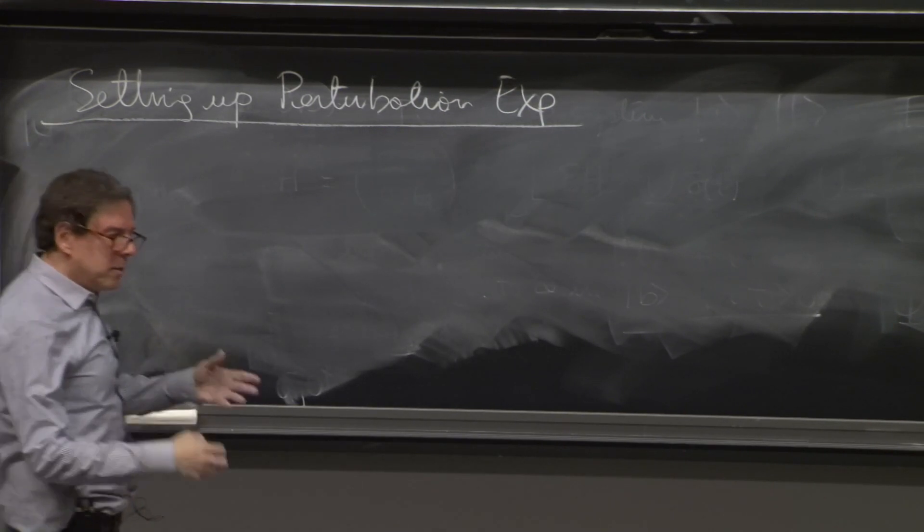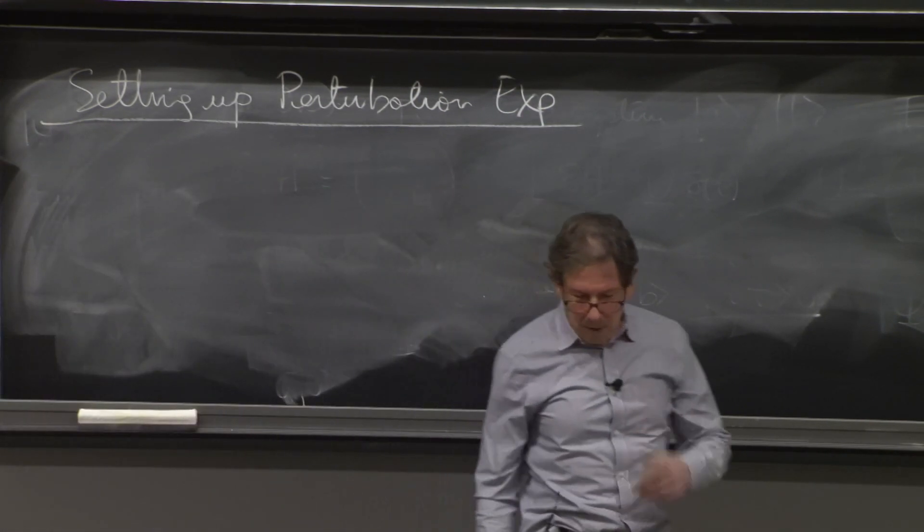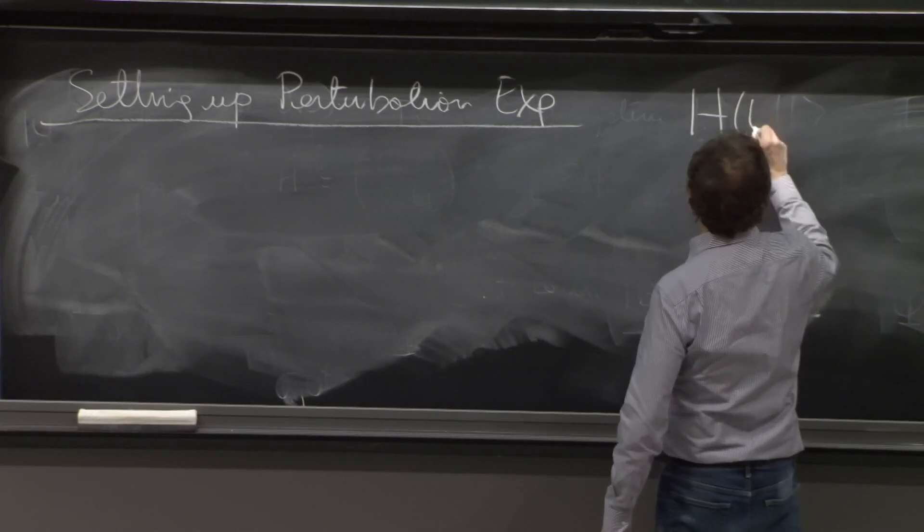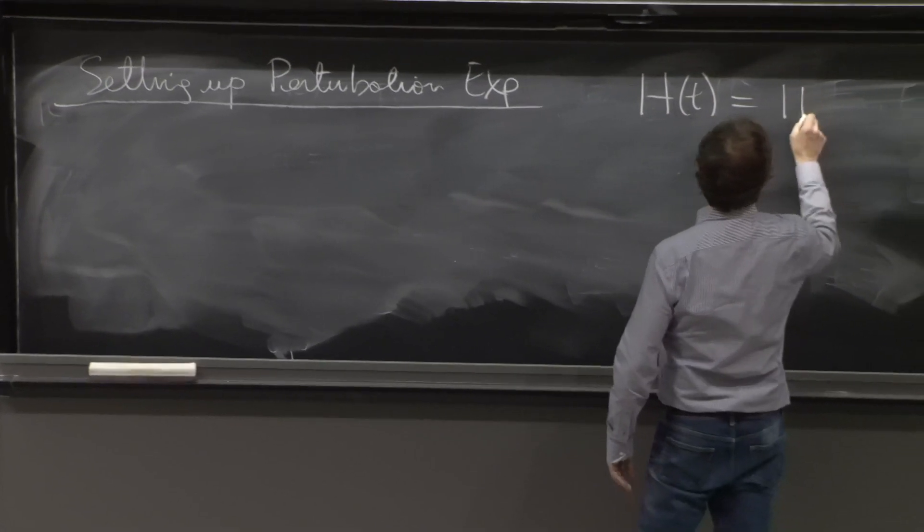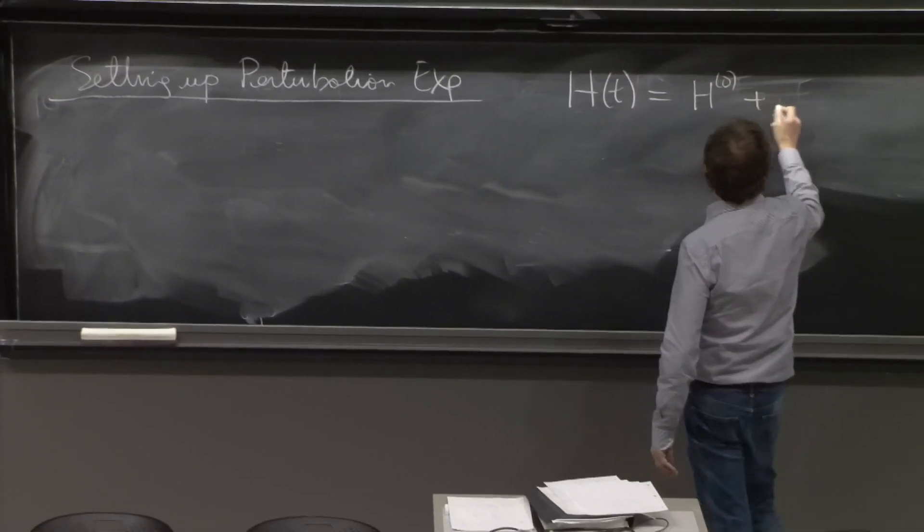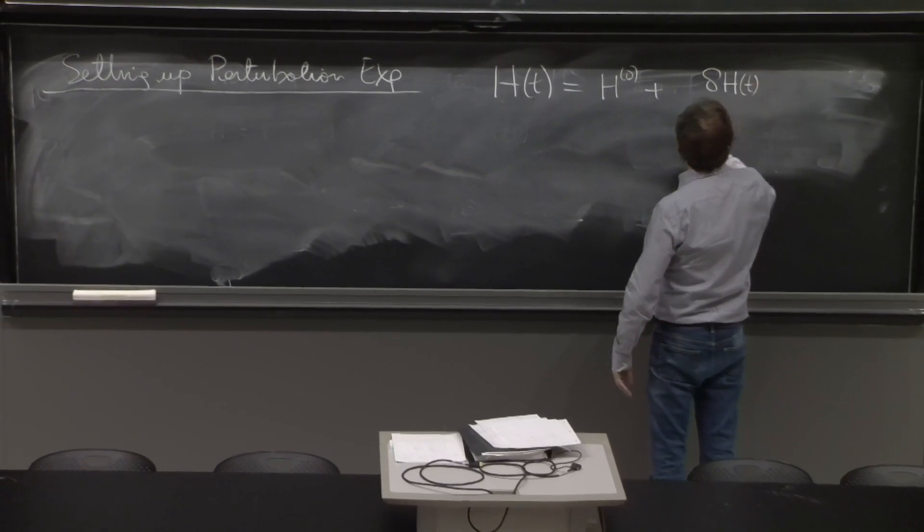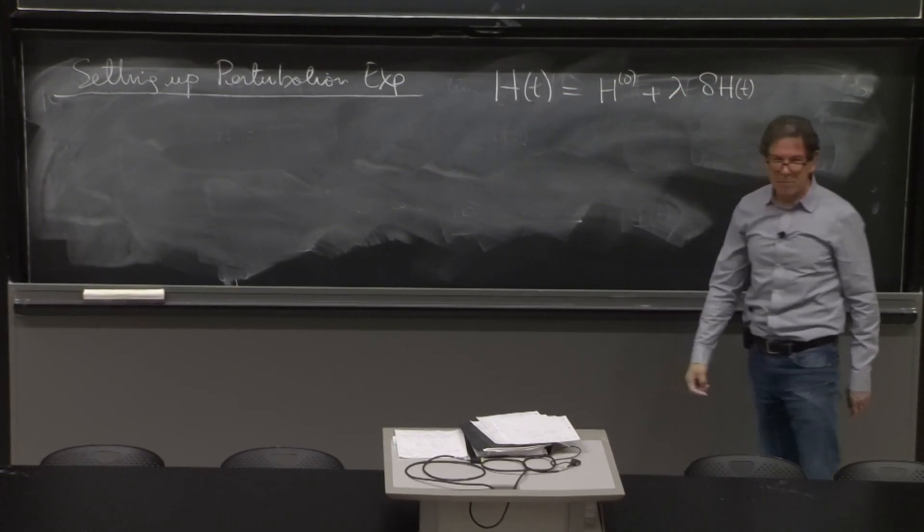So we want to give just an idea of what we're going to do. So H of t is going to be H of 0 plus delta of H of t.